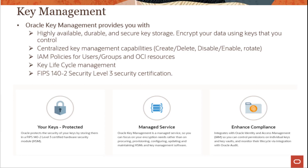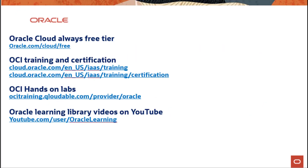To recap, data encryption occurs at multiple levels — all data stored in OCI is encrypted, and the keys used to encrypt it are highly available, durable, and secure. Multiple levels of authentication are provided, and you can tighten these controls further using IAM policies. In the next lecture, we look at security controls from an authentication perspective.